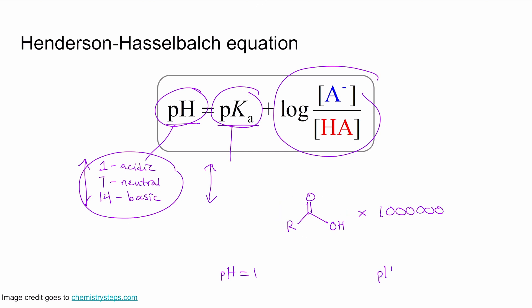But if these millions of carboxylic acids were in a basic solution, then there would be way more of the deprotonated version than the protonated one. And you can see how that makes sense using the equation.